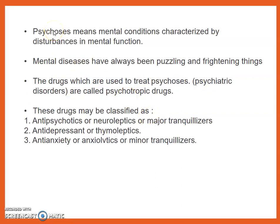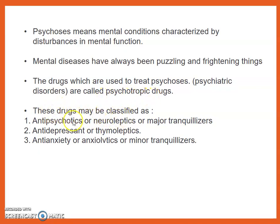First of all, we see Psychosis. Psychosis means a mental condition which is characterized by disturbance in mental function. Mental diseases have always been puzzling and frightening things. The drugs which are used to treat psychosis and psychiatric disorders are called psychotropic drugs. These drugs may be classified as antipsychotic or neuroleptic or major tranquilizers, antidepressant or thymoleptics, and anti-anxiety or anxiolytic or minor tranquilizers.